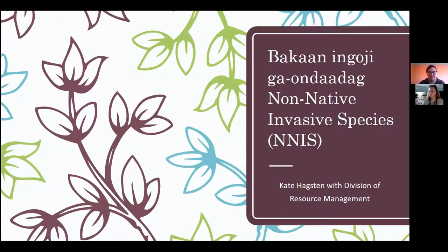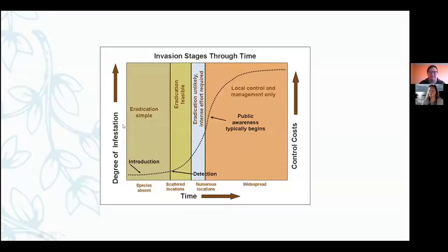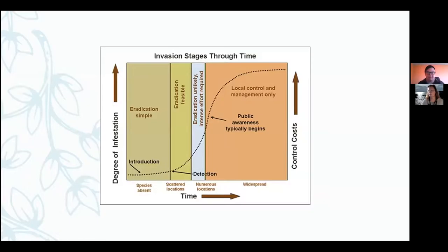Our goal is to maintain or improve the ability of the ecosystem. This goes through how an invasive species becomes present in a local ecosystem. You have introduction — bringing it from somewhere, maybe through a boat, somebody's soil, or somebody just planted it because they thought it was pretty. Eventually that would spread out, depending on how well it does in this climate, to where we actually see it being a problem.